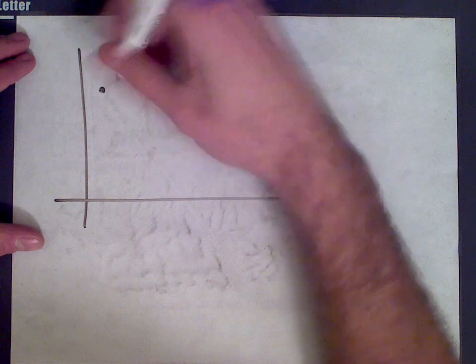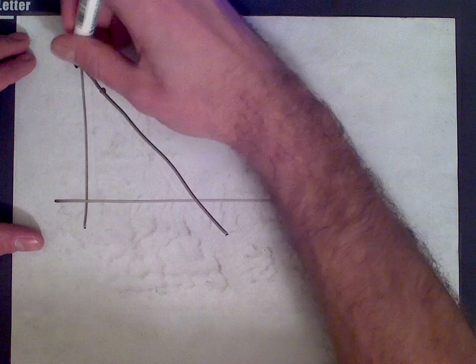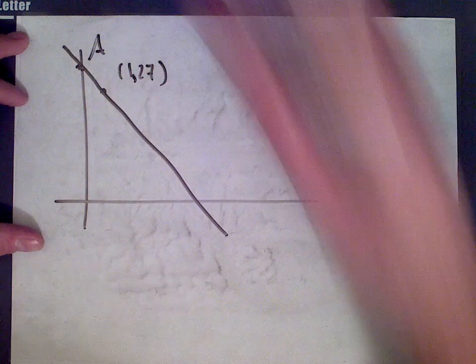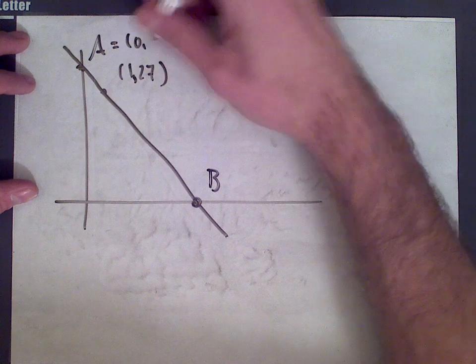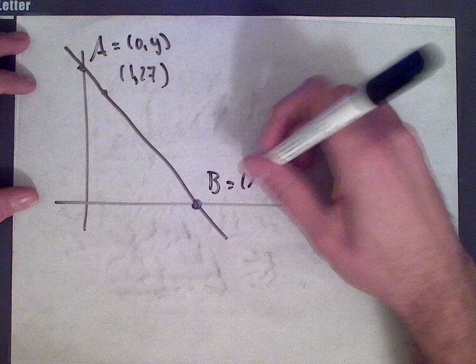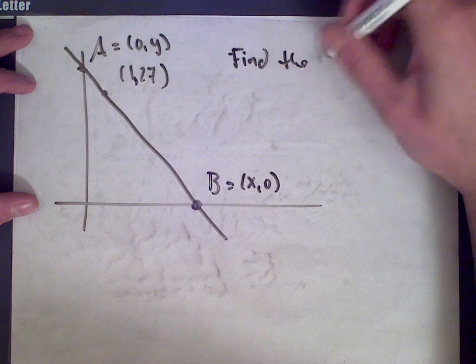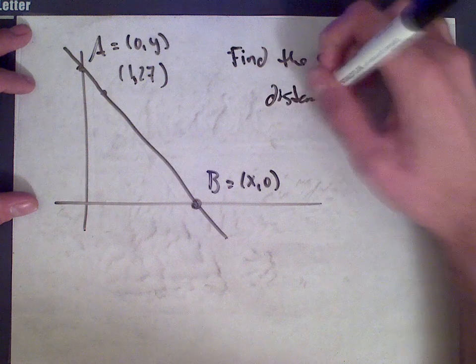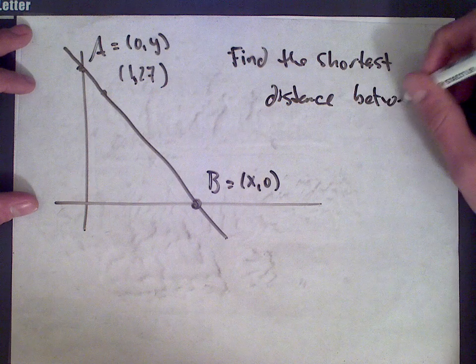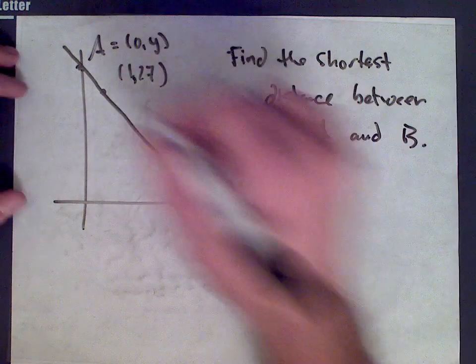We have a line passing through the point (1, 27) and we're told it intersects the positive y-axis at a point A and the positive x-axis at a point B. We'll say that point A is at (0, y) and point B is at (x, 0). The question is: find the shortest possible distance between A and B, given that the line passes through the point (1, 27).